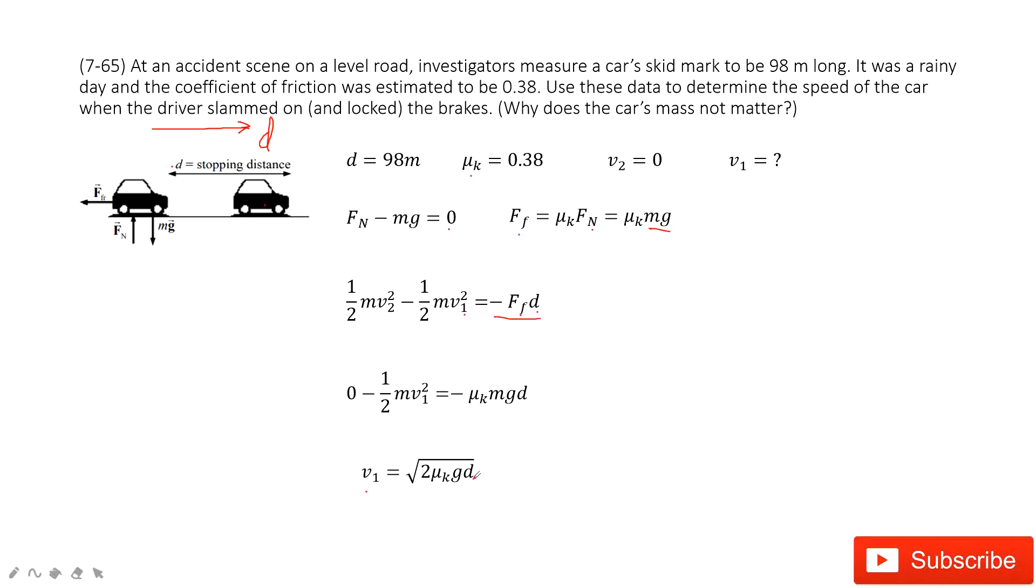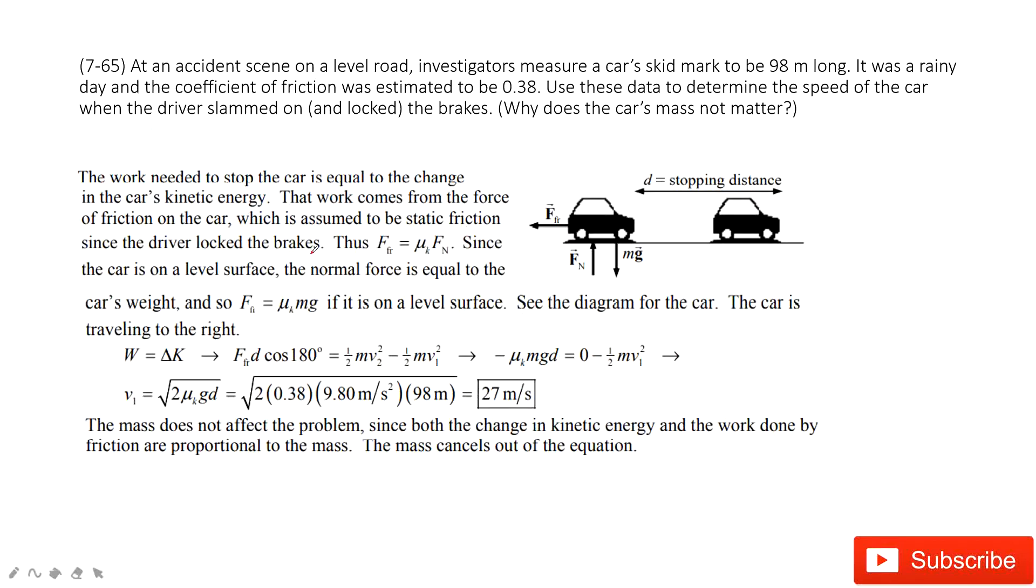So as to you why does the car's mass no matter? Because in this equation, the mass can be cancelled. Agree? And then after we input the numbers inside, we can get v1 is equals 27 meters per second.